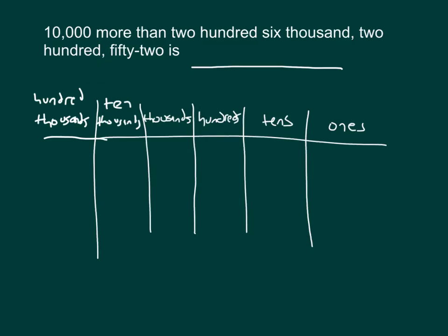Let's look at this problem. 10,000 more than 206,252. We'll use a place value chart that I have already labeled. In this case, this will be a sum, because we're talking about 10,000 more.